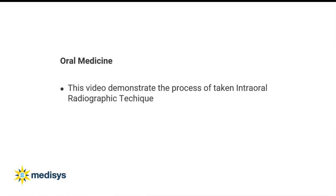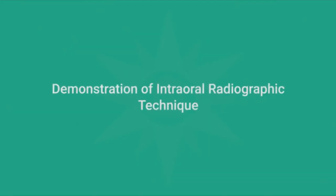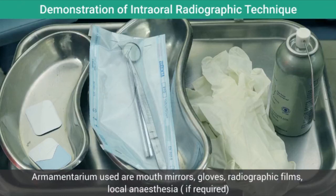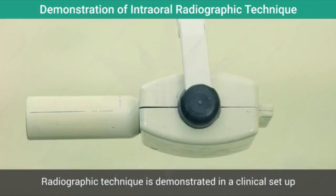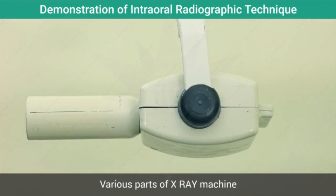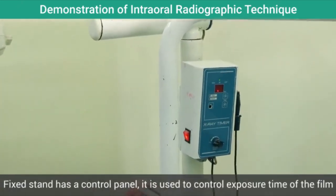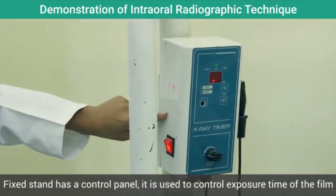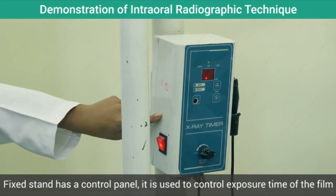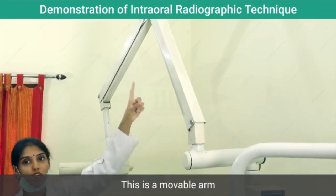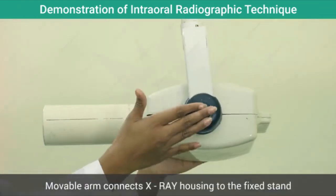This video lesson shows the important basic process of taking an intraoral radiograph for diagnostics — a type of learning not usually made available to dental students in conventional classroom teaching. Demonstration of intraoral radiographic technique: the armamentarium used is a mouth mirror, gloves, local anesthesia if required, and a film. Let us understand the various parts of an X-ray machine: the fixed stand has a control panel used to adjust the exposure time of a radiograph, and the movable arm connects the X-ray housing to the fixed stand.